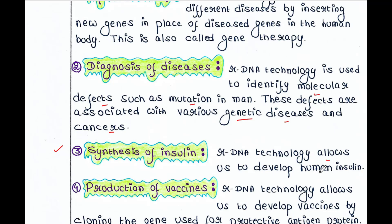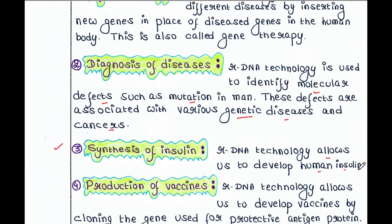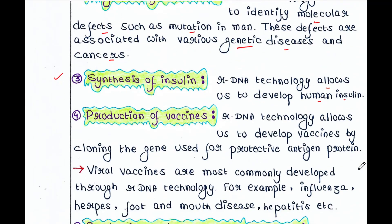Next is synthesis of insulin. rDNA technology allows us to develop human insulin — the insulin gene could be cloned in a vector to produce this important therapeutic protein.